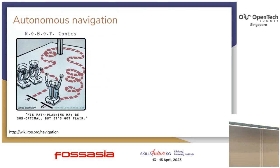Most people here already know what autonomous navigation is, but for the sake of completeness: in robotics or self-driving, autonomous navigation is basically the process of getting an agent to move from one point to another, where your only input is telling it where you need it to go or arrive at, and the agent is able to figure out how to get there. Along the way it's avoiding obstacles, finding the most optimal path, and respecting certain constraints like how fast it can go.